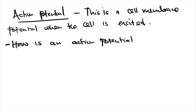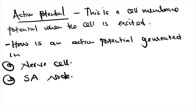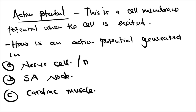How is an action potential generated? We're going to look at three scenarios: in a nerve cell, in the SA node, and in cardiac muscle. Note that the nerve cell and skeletal muscle have similar action potential propagation curves.